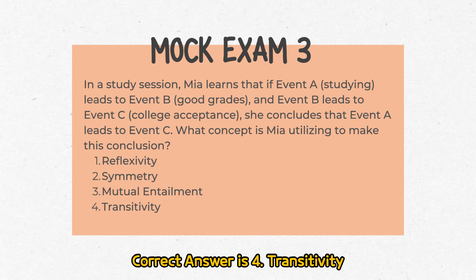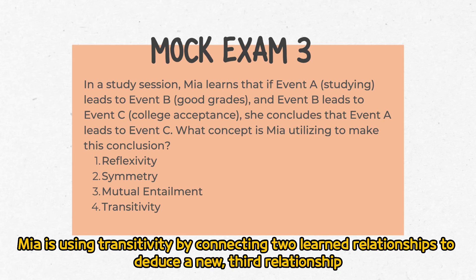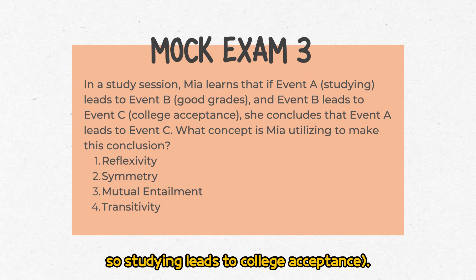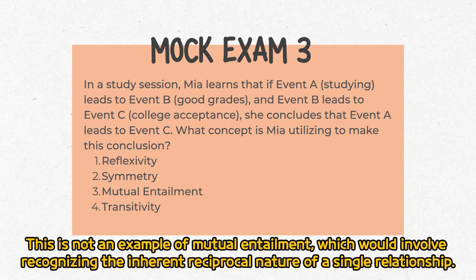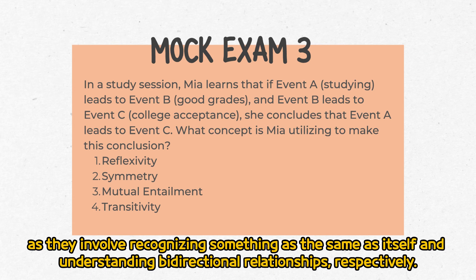The correct answer is 4: Transitivity. Maya is using transitivity by connecting two learned relationships to deduce a new third relationship without being directly taught this connection. Studying leads to good grades, and good grades lead to college acceptance, so studying leads to college acceptance. This is not an example of mutual entailment, which would involve recognizing the inherent reciprocal nature of a single relationship. Reflexivity and symmetry are not demonstrated here, as they involve recognizing something as the same as itself and understanding bidirectional relationships, respectively.